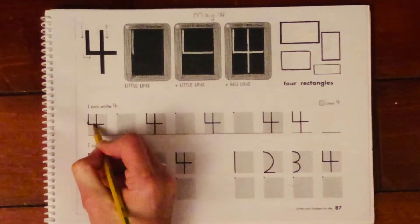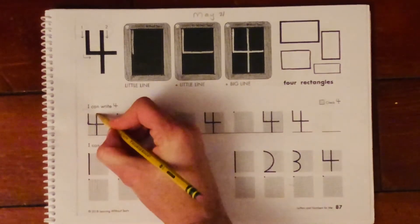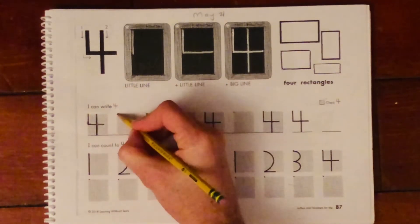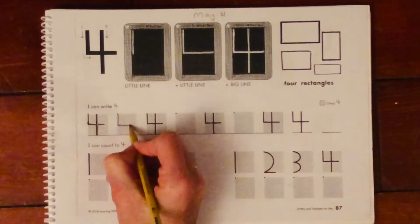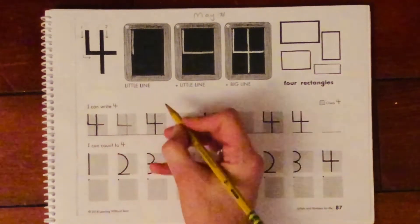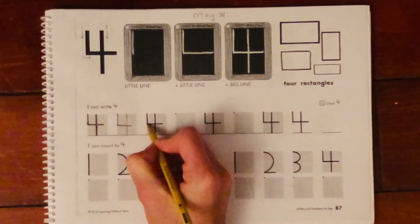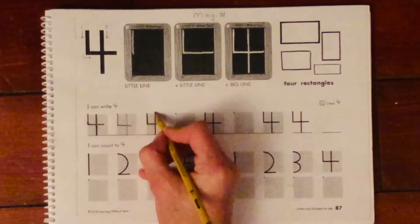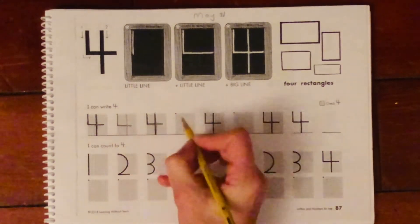So little line over, frog jump up, big line down, little line over, frog jump up, line down. Remember, I got to touch all the way to the bottom, little line over, frog jump up, little line all the way down.